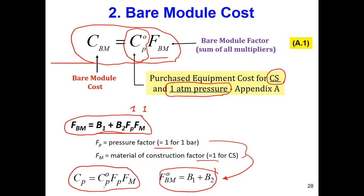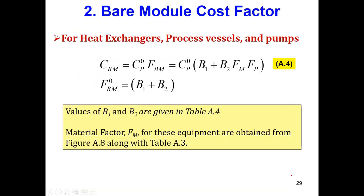We also use an equation that corrects for the effect of pressure and material of construction in the total cost of the equipment. We can combine all four equations together to reach another equation shown in the next slide. The most important thing is that you need to be able to use this equation at the end.